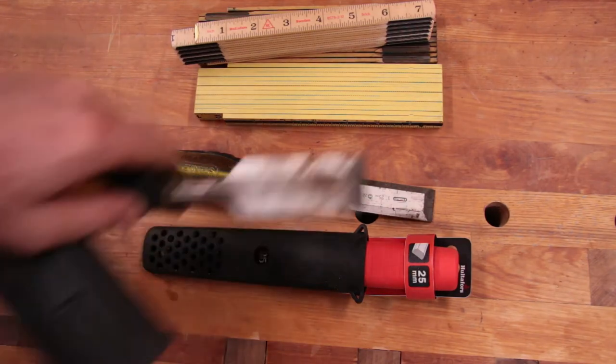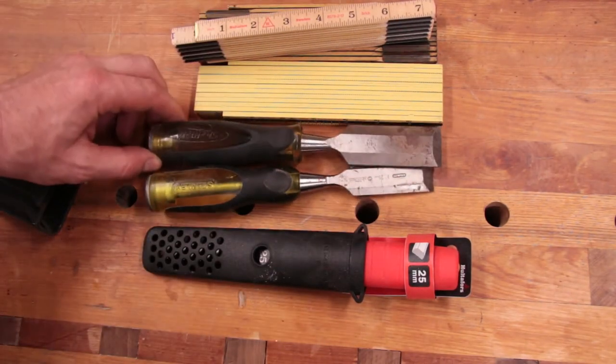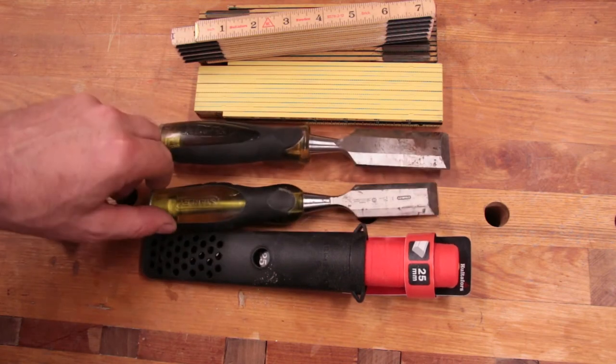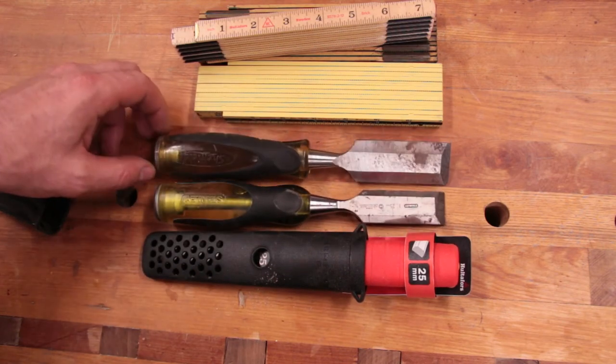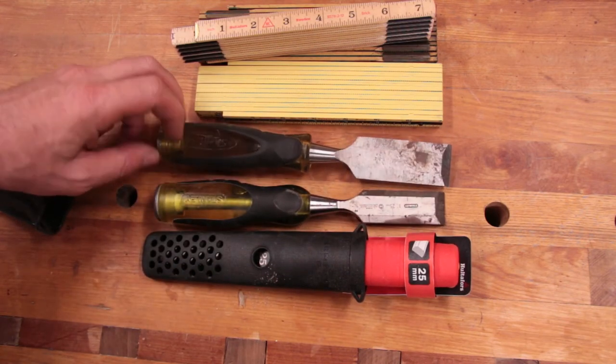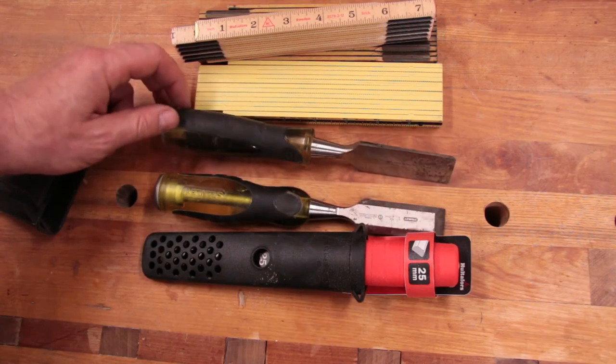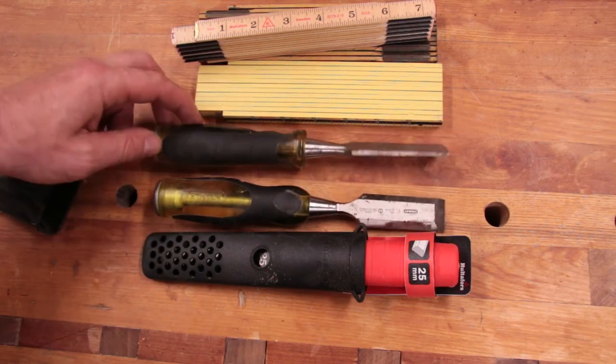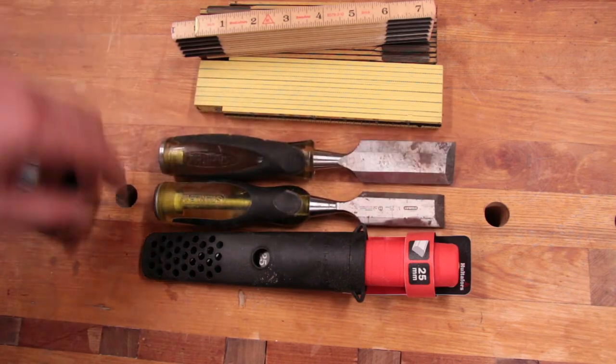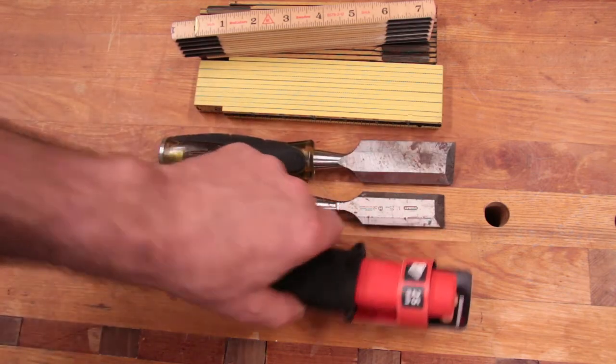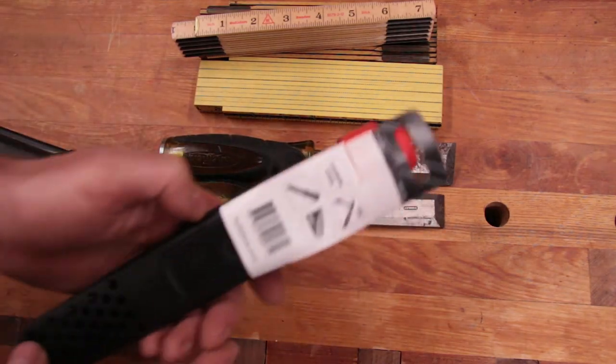So I bought this Sheffield chisel, which is probably made in the same factory, just different mold for the handle. And this also doesn't hold an edge very well. So they're a little bit annoying. But I noticed Holtifors sold these that are carbon steel.